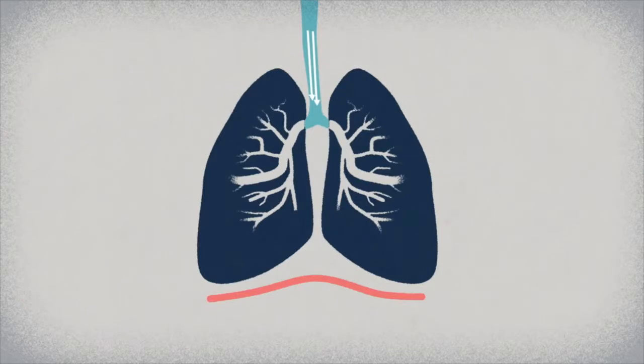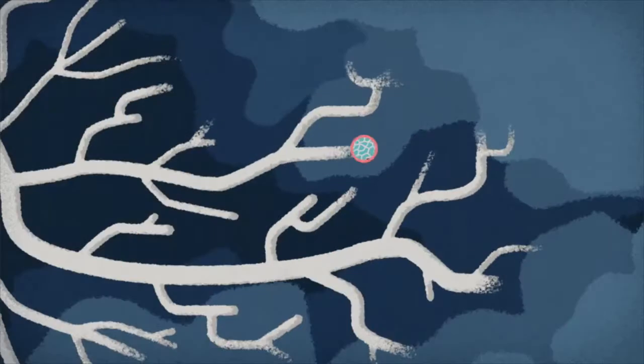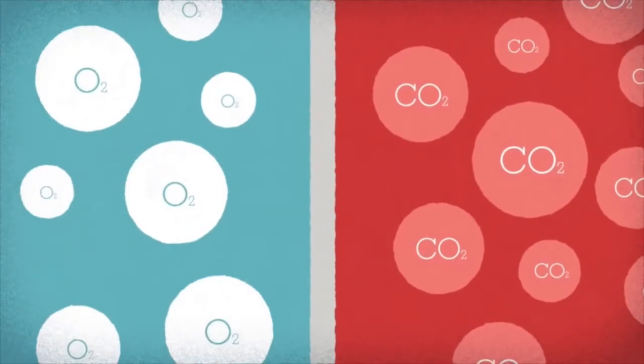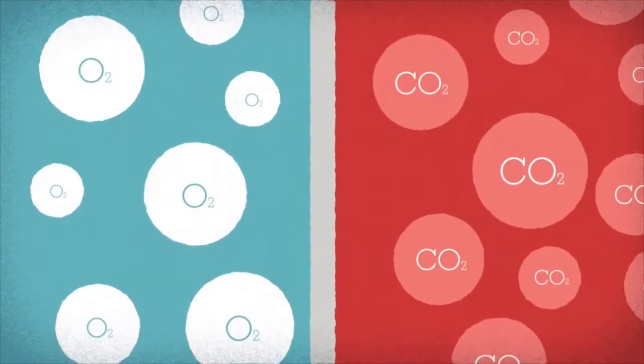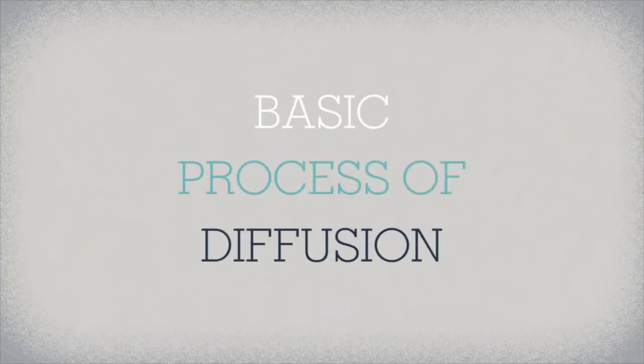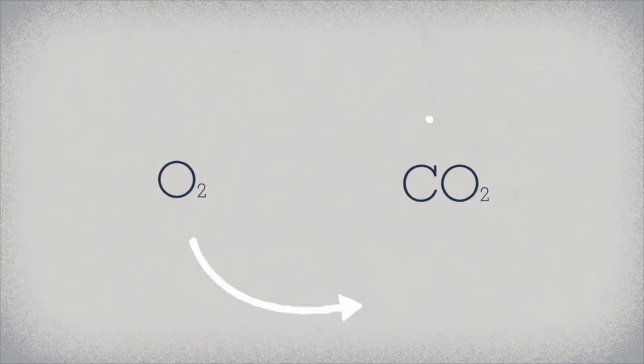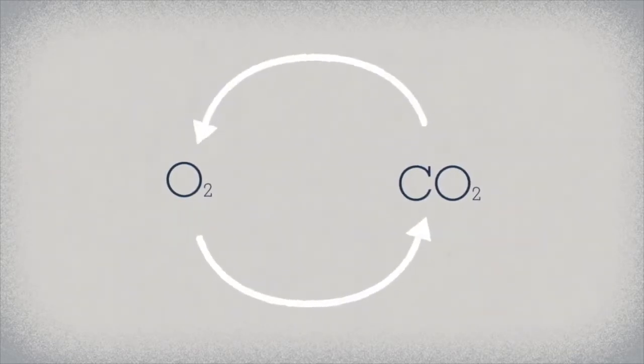The air you've breathed in fills these sacs, causing the lungs to inflate. Here is where the vital exchange occurs. At this point, the capillaries are packed with carbon dioxide and the air sacs are full of oxygen. But due to the basic process of diffusion, the molecules of each gas want to move to a place where there is a lower concentration of their kind. So as oxygen crosses over to the capillaries, the hemoglobin grabs it up, while the carbon dioxide is unloaded into the lungs.